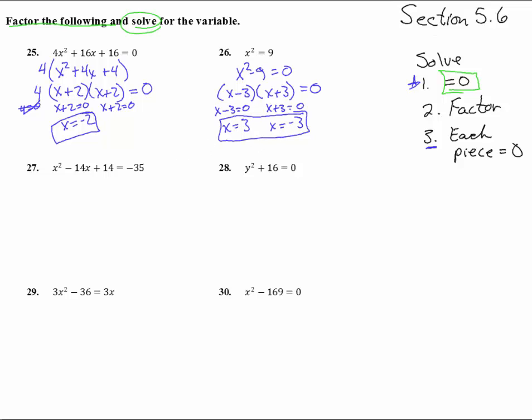Number 27. First step, get it equal to zero, so add 35 to both sides. We get x squared minus 14x plus 49 equals zero. So that was with a plus 35 here and a plus 35 there.